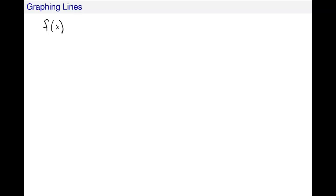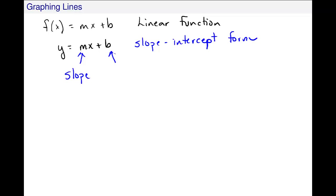A linear function looks like f(x) equals mx plus b. This is a linear function. You probably more likely remember it being y equals mx plus b. In this form, this is called the slope-intercept form of a line. This gives me the slope m and b is the y-intercept.